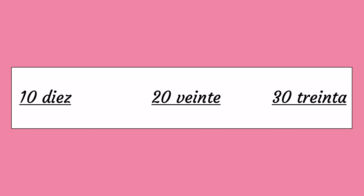Let's start with 10, 20, and 30. These 3 numbers do not follow any pattern, so you have to memorize them individually. This is how you pronounce them.